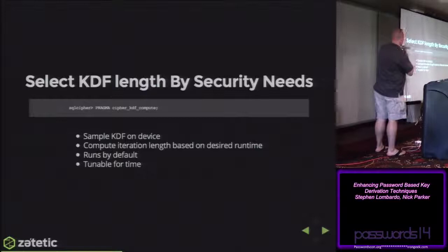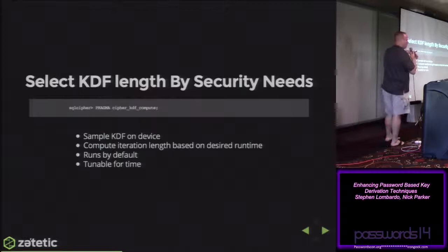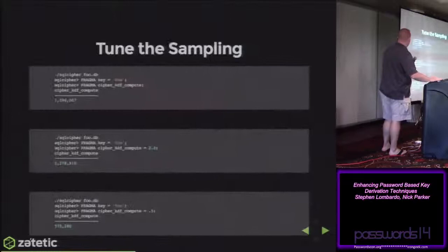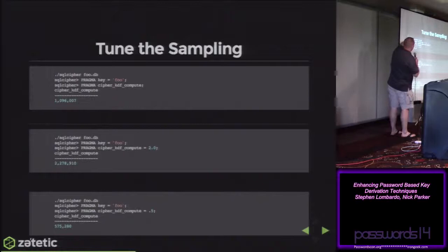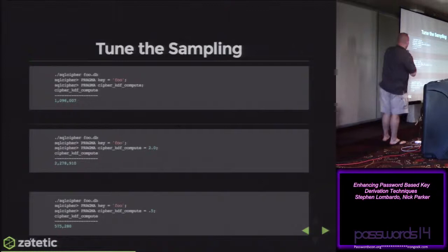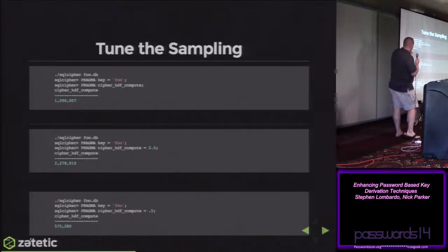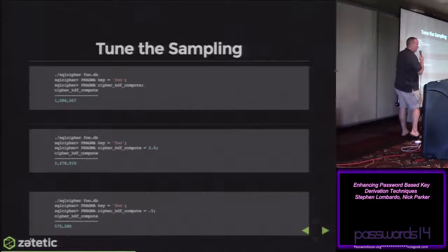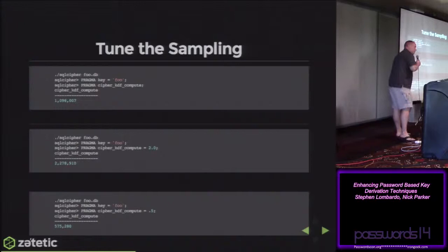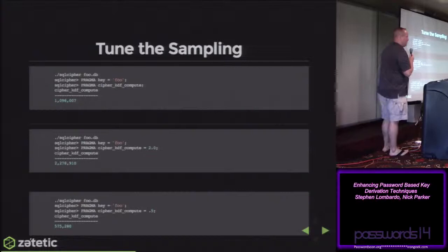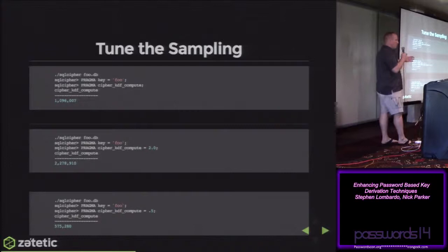Here's an example from the SQL Cipher command shell, showing how you interact with the KDF computation routine. Three examples where we initialize a database, key the database, and ask it to compute a KDF work factor — all run on a MacBook Pro 2.3 GHz device. In the default scenario running for one second, we computed just over a million iterations. Allowing two seconds produced just over 2.2 million. Constraining to half a second gave 575,000 iterations. That's quite a spectrum of change from our previous static value.